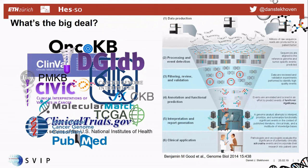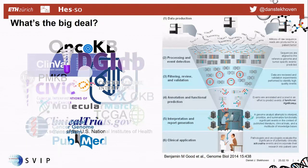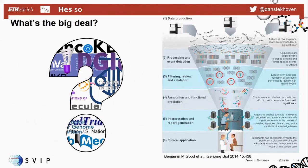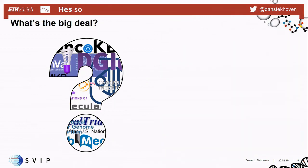Some of these places are databases that can be queried; others are harder to query because their information is more unstructured. There are also places which don't have variant annotations but contain information about clinical trials or research context, and of course publications - because ultimately it's a reference to a clinical trial that makes the triplet of a disease, a variant, and a potential treatment meaningful. There's a lot of work to make sense of this ecosystem of publicly available information.